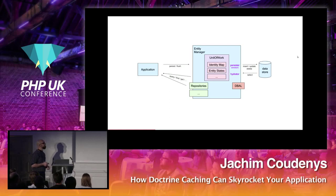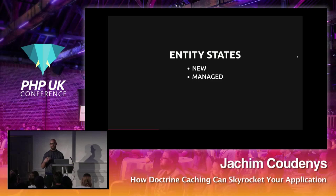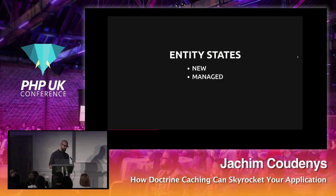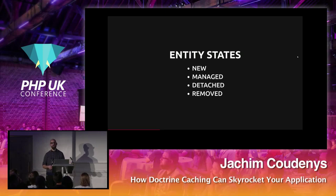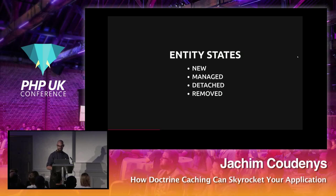Entities stored in the identity map have a state. There are four states in Doctrine: New — when you create a new product and haven't persisted it yet; Managed — once you persist it in the entity manager or fetch it from the database; Detached — if you explicitly detach it or serialize it, since it's no longer an object; and Removed — flagged for removal. With transactional write-behind, removal is only flagged until flush, at which point it's effectively deleted from the database.